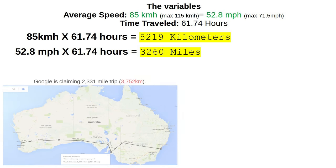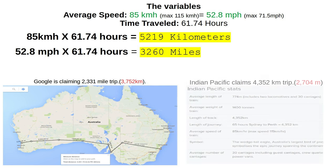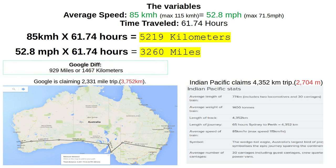When we compare that against Google, there is a dramatic difference in the distances. For Google, there's a difference of 929 miles or 1,467 kilometers between the speed-times-time calculation and what Google shows on their map. For the Indian Pacific's own stated distance, the difference comes out to 556 miles — and just to give you an example, 556 miles would be half of California on a north-south orientation. That's a big chunk of land.